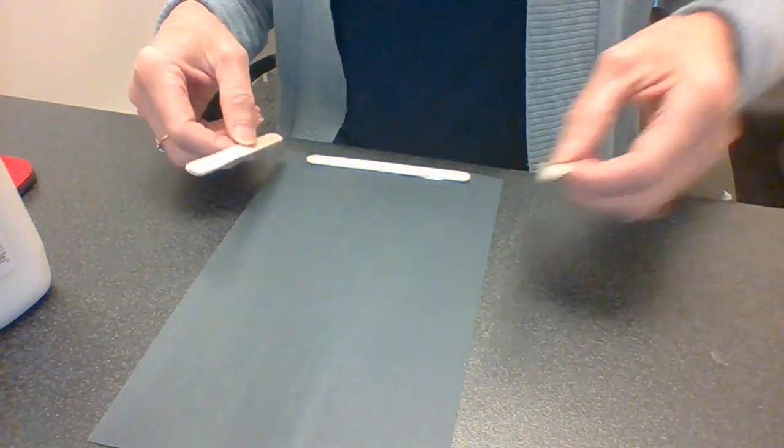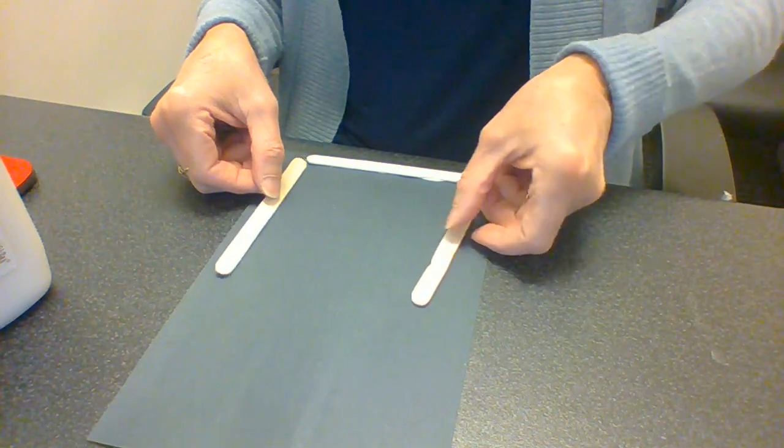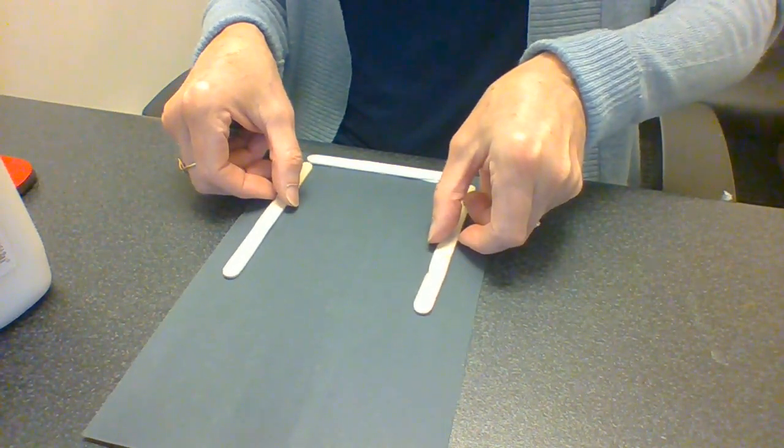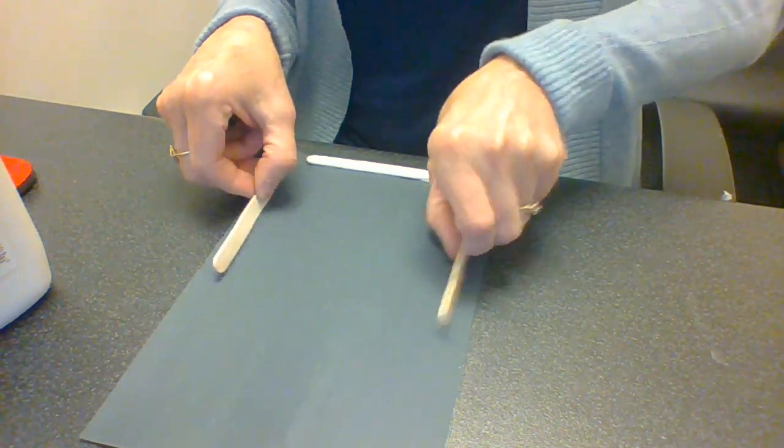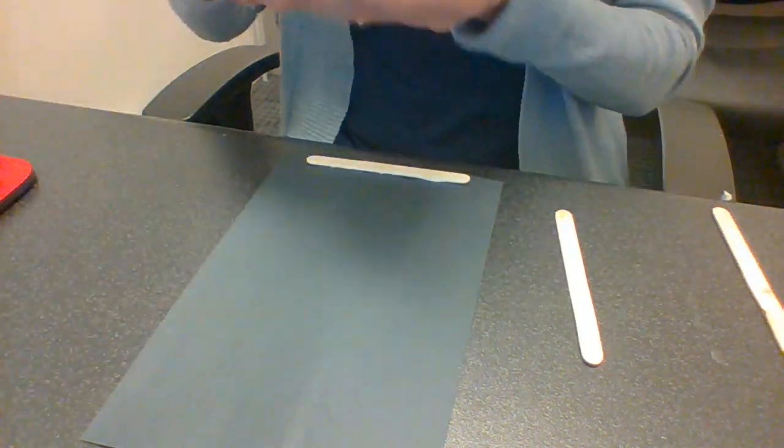Next you need two pieces, and you just need to measure kind of with your eyes where they're going to go, and then you take them off and you put some glue on them.